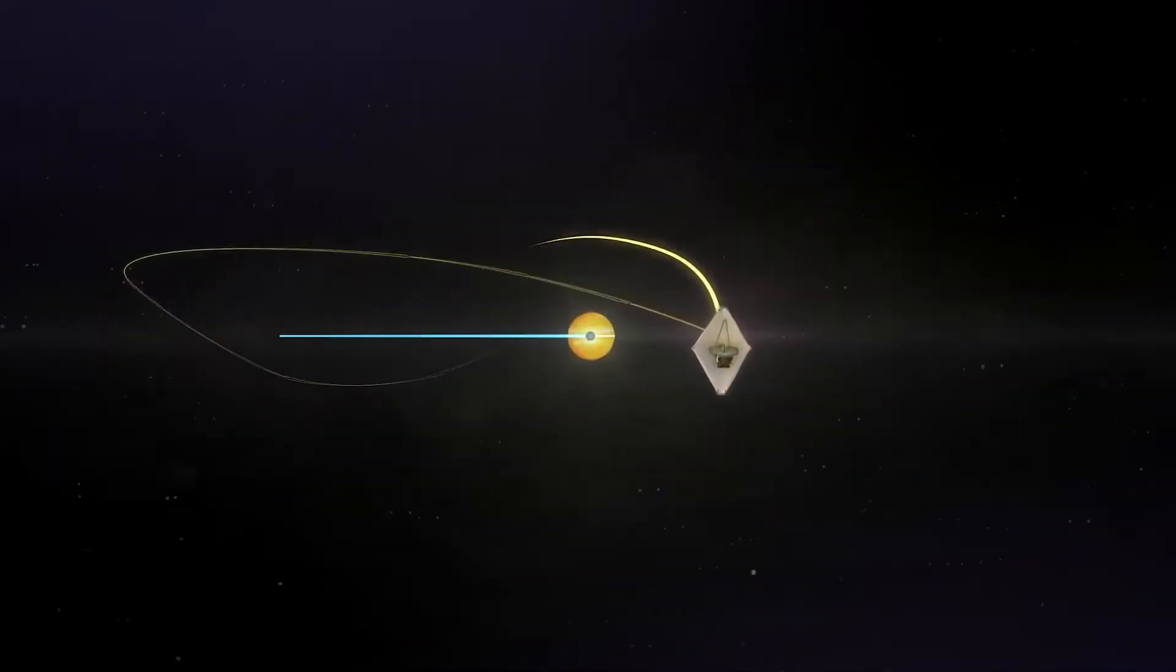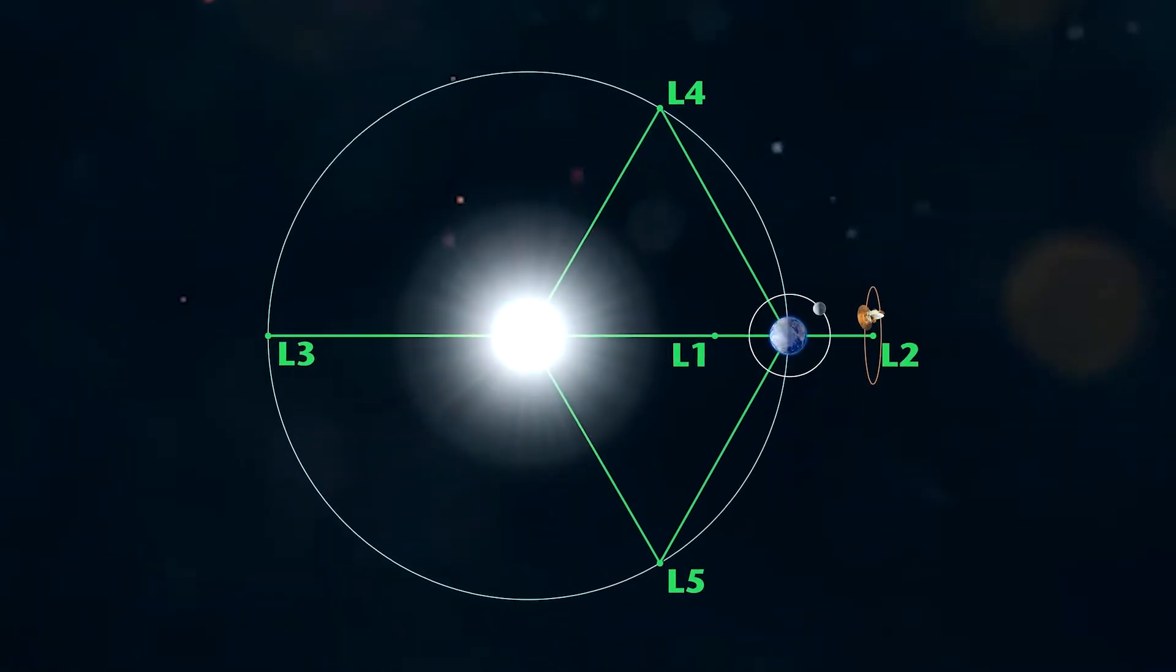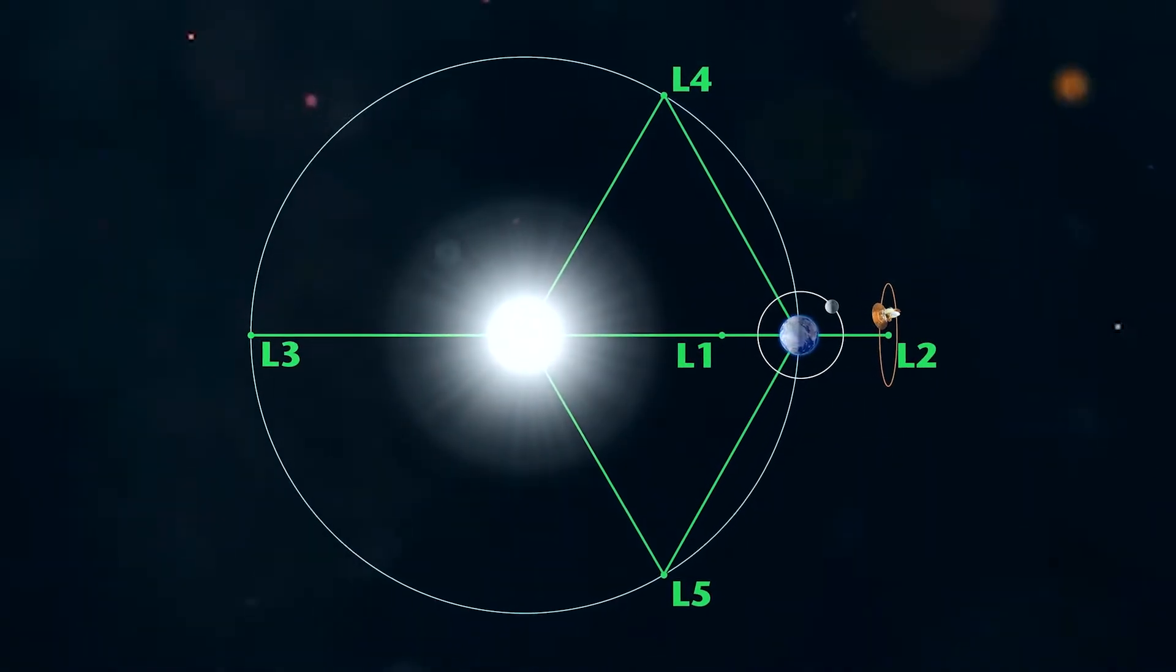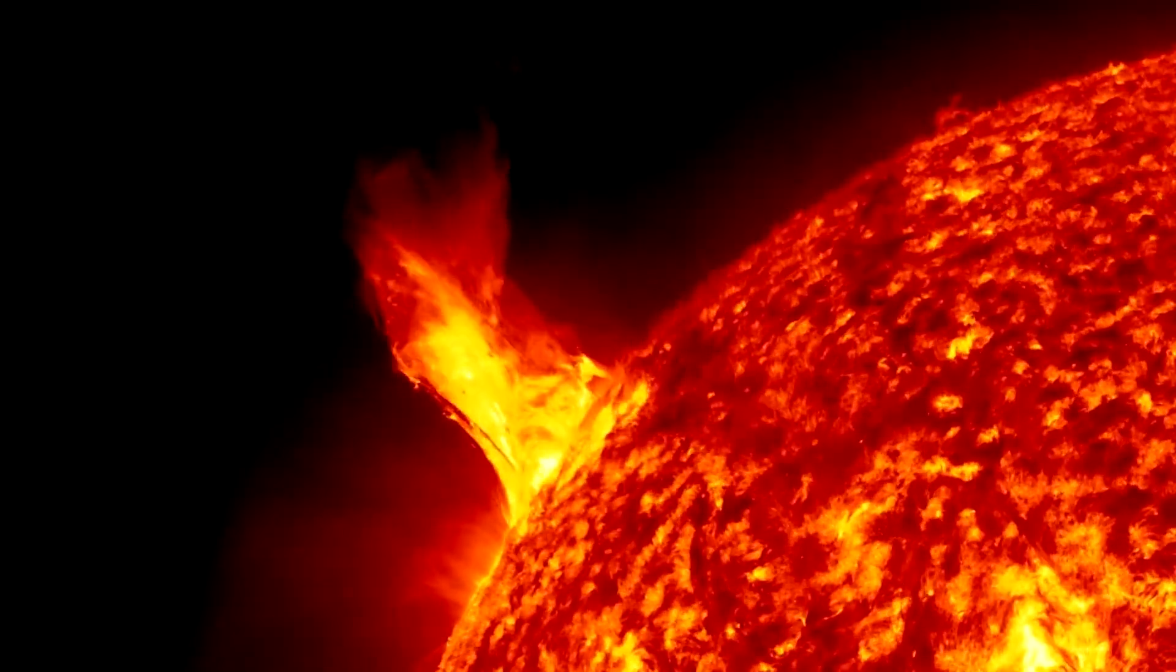Lagrange point satellites are advantageous for long-term observation. For example, those positioned between the Earth and the Sun allow us to forecast potential hazards, such as intense solar storms.